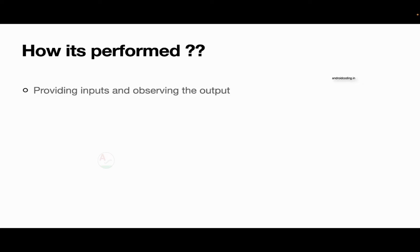If the output is 2 then your test is passed, and if the output is something other than 2 then it is failed. In this way you can assess the basic functionality of unit testing in a small code component. Creating a series of test cases is also required. For example, in a login scenario you need to observe whether the user has provided the input or not, and if the input has been provided, whether it is in a valid form or not. You also need to verify the pattern of email addresses, passwords, and all input fields.